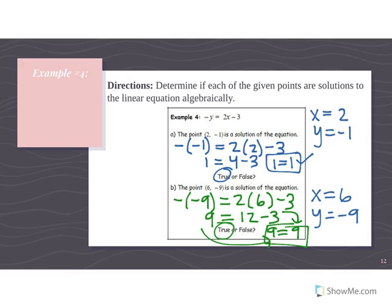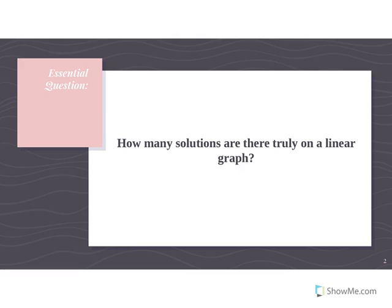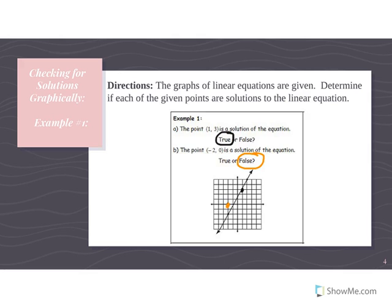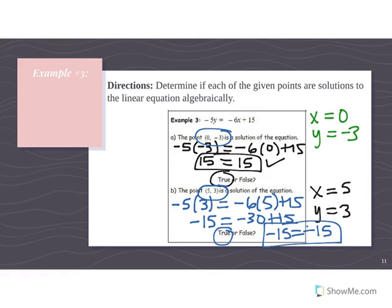To recap: if an equation is equal on both sides, you have a true statement and the point is on the line. If the numbers don't equal each other, it's a false statement and the point is not on the line. I hope you understood all this — if not, please rewind, slow it down, keep re-watching, and I'll see you guys next time.